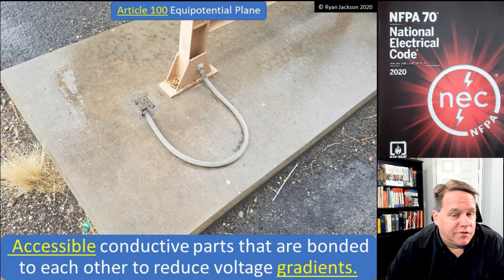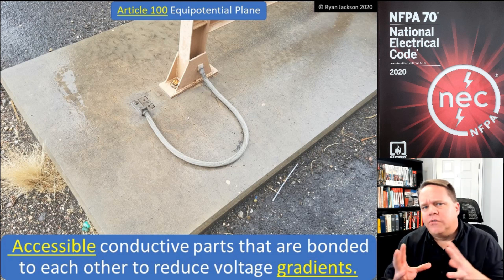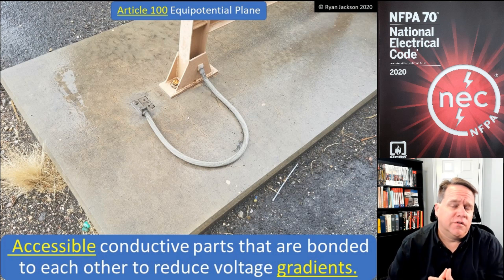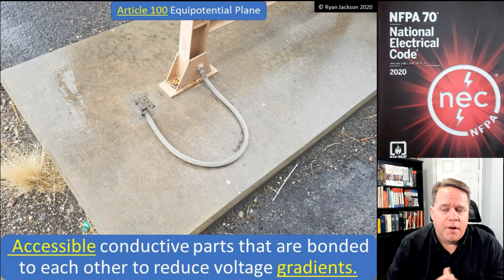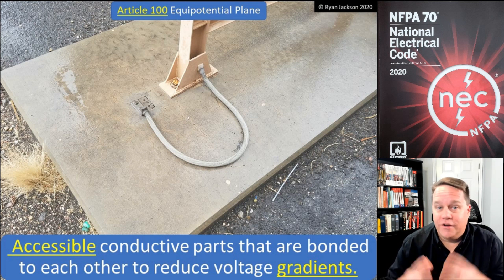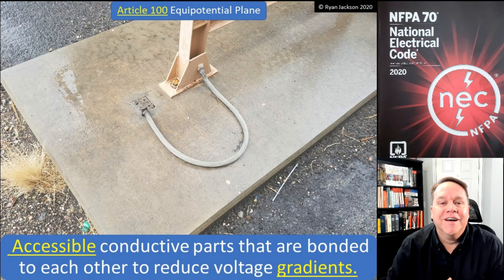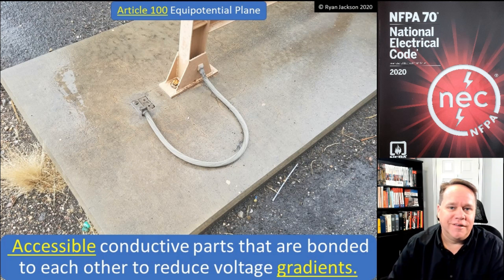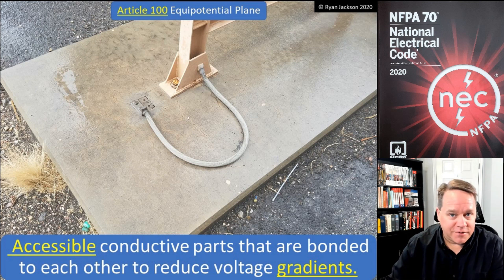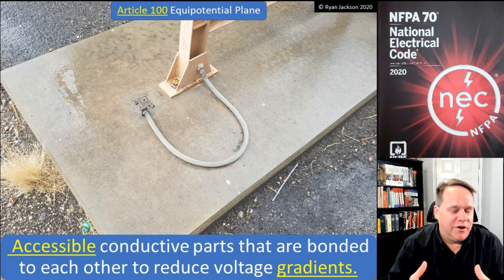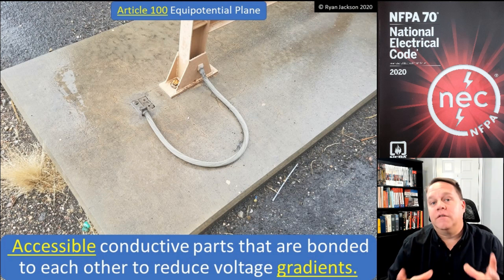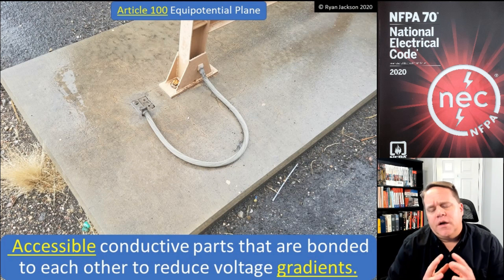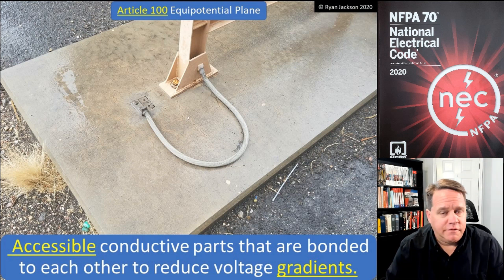Let's talk about equipotential planes. First, let's break down the word: 'equal potential' is actually a real dictionary word, unlike 'ampacity' or 'overcurrent.' Equal potential means two different potentials that are equal. What we're really talking about is voltage — if you define voltage, it's the difference in potential between two objects. So an equipotential plane is when we're trying to establish the same voltage on a plane.